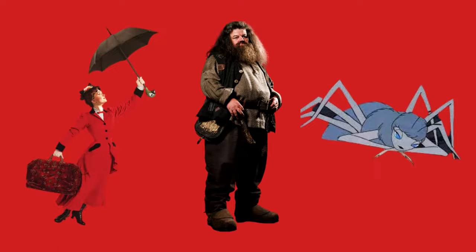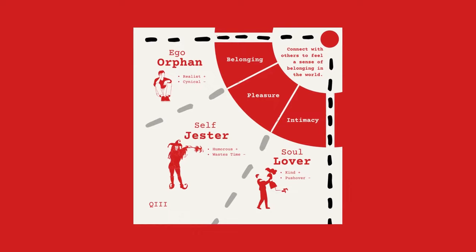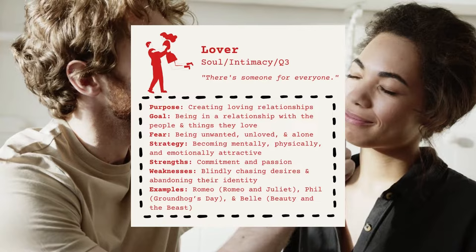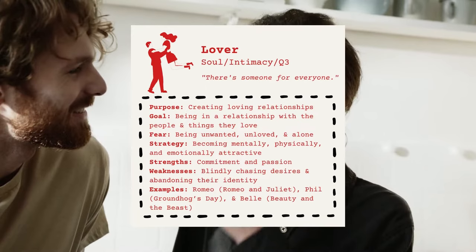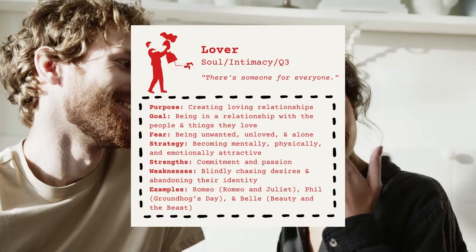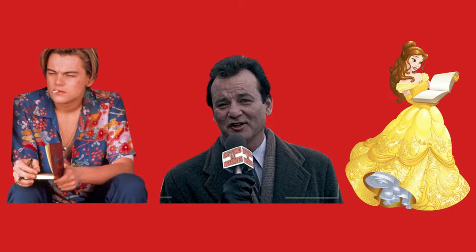Moving on to quadrant three, we have the lover, the jester, and the orphan. The lover is a soul-type archetype that believes intimacy is the best way to connect with others and find meaning in the world. Their purpose is creating loving relationships with others. These characters attempt to be in relationships with the people and things they love, and fear becoming unwanted, unloved, and alone. To avoid this, they try to become mentally, physically, and emotionally attractive. They have a strong sense of commitment and are very passionate, but often blindly chase desires and abandon their identity. Famous lover characters include Romeo, Phil, and Belle.